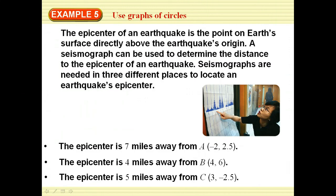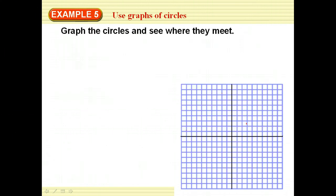The epicenter of an earthquake is a point on the Earth's surface directly above the earthquake's origin. A seismograph can be used to determine the distance to the epicenter. Seismographs are needed in three different places to locate an earthquake's epicenter. We graph circles for each location and see where they meet: the epicenter is 7 miles from point A at (−2, 2.5), 4 miles from point B at (4, 6), and 5 miles from point C at (3, −2.5).